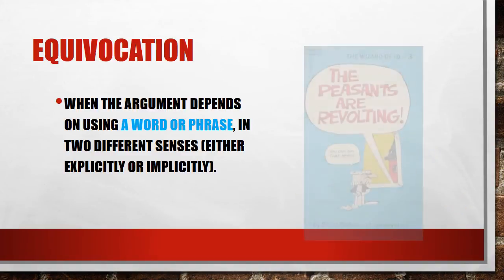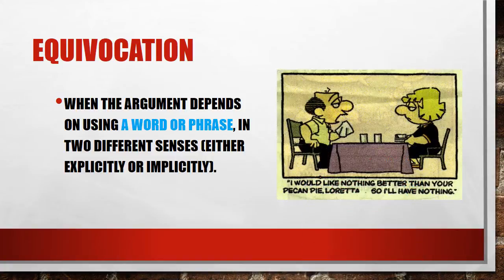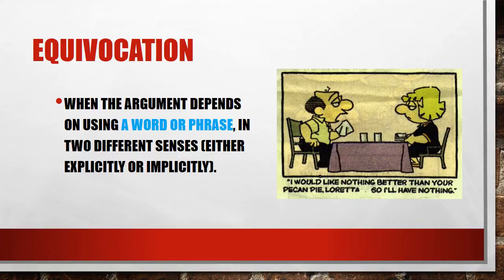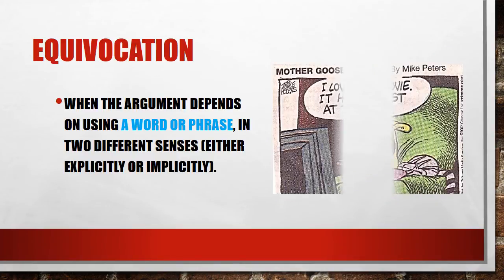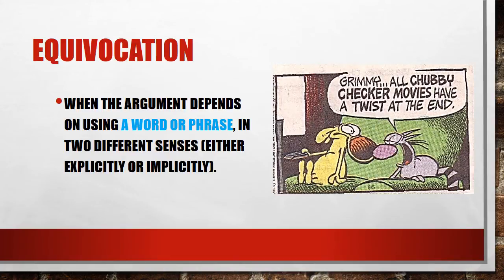There are going to be a lot of jokes you're just not going to get unless you catch the equivocation — like the peasants are revolting: do you mean rebelling, or they're disgusting? I'd like nothing better than your pecan pie, Loretta — so I'll have nothing. Or try this: I love this movie, it has a twist at the end — a twist as in an unexpected ending, or every Chubby Checker movie has a twist at the end — twist as in dance.